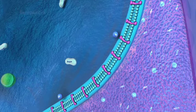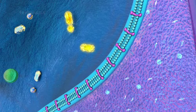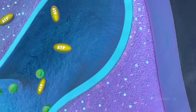On the cristae, sugar is combined with oxygen to produce ATP, the primary energy source for the cell.